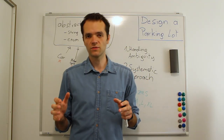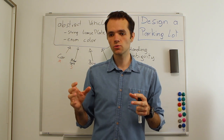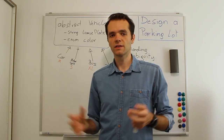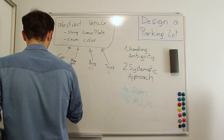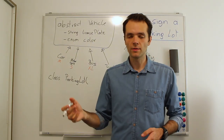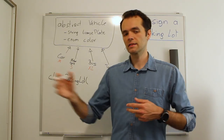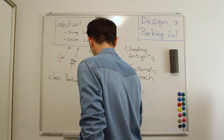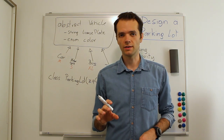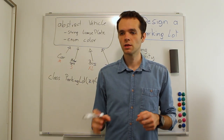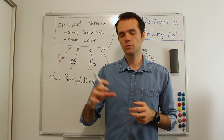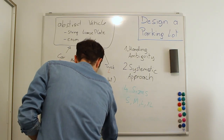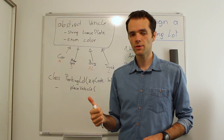Now we have a vehicle class to represent vehicles. We also need a big system — a method or function where we can place a car into the parking lot. This is represented by the parking lot class. If we own multiple buildings with parking lots, we could pass in something like a zip code to the constructor. The most important method will be place vehicle, where a driver comes in and wants to park.